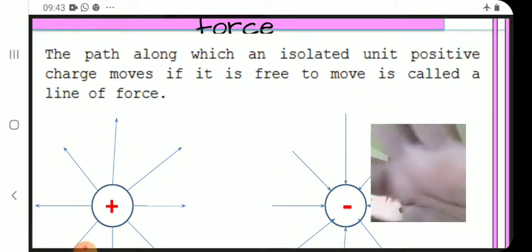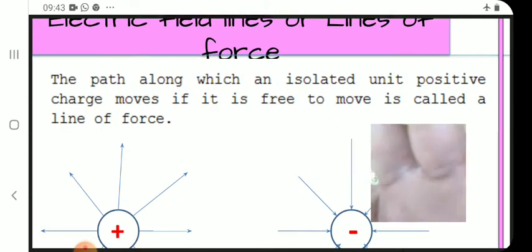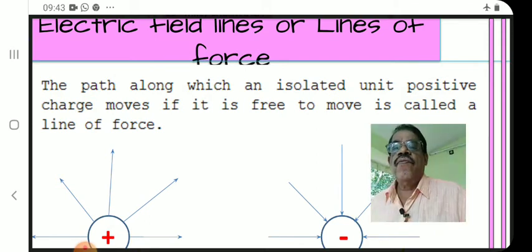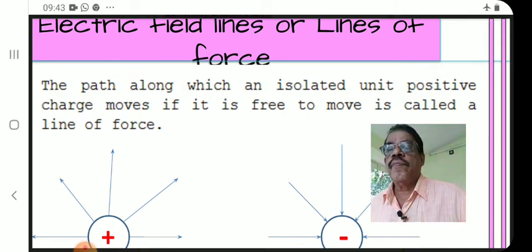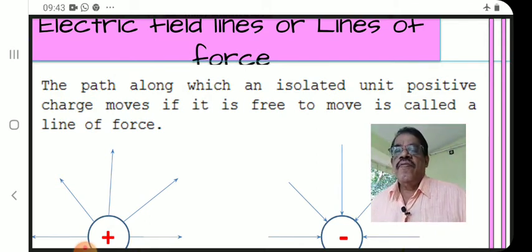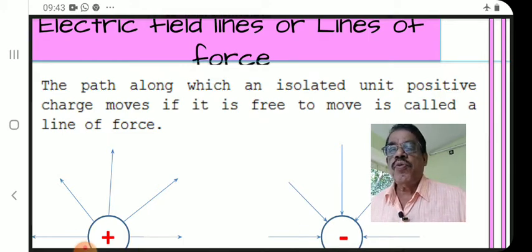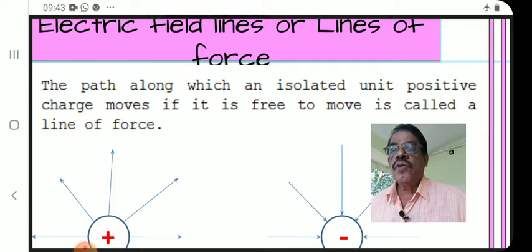First question: What are electrical field lines or lines of force? Definition: The path along which an isolated unity positive charge moves, if it is free to move, is called a line of force.